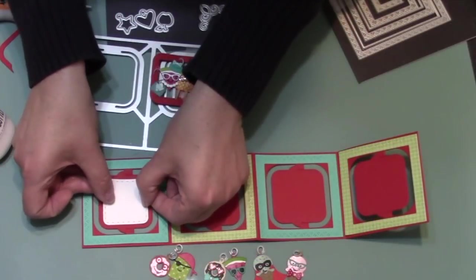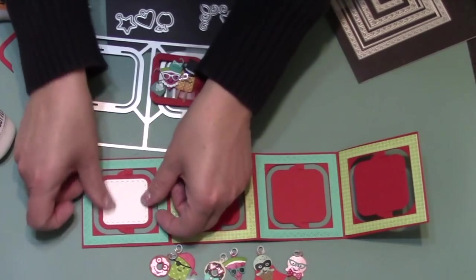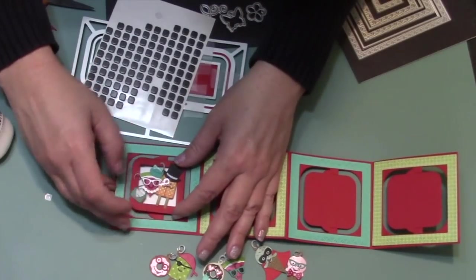I've used the stitched square from the Charm Accordion to cut out of white cardstock as a backer for my frames. Then when I add my frames, I'm going to use pop dots.